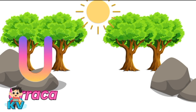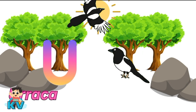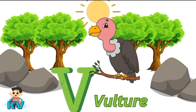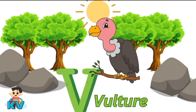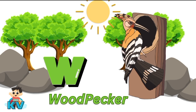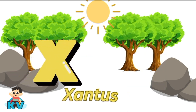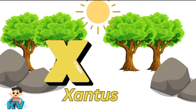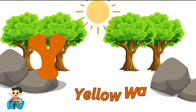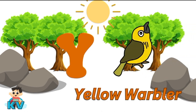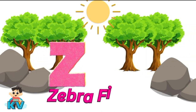U for Araka. V for Vulture. W for Woodpecker. X for Xantus. Y for Yellow Warbler. Z for Zebra.